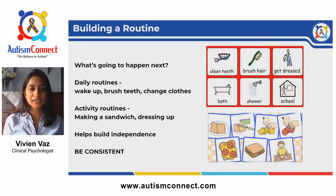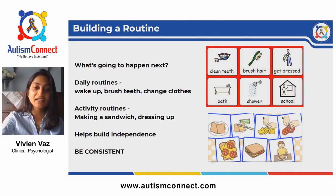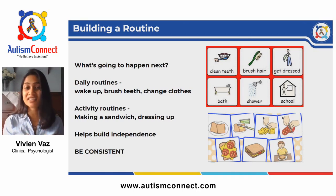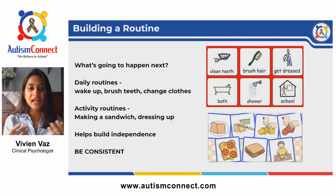Let's begin with building a routine. Building a routine helps a child with autism predict and anticipate what is going to happen next. Your child has trouble making sense of the world around them every single day, which causes high stress and anxiety. When we are anxious, the last thing we think about is following someone's instructions. A routine can help create structure in their lives and reduce anxiety caused by the chaotic world around them.